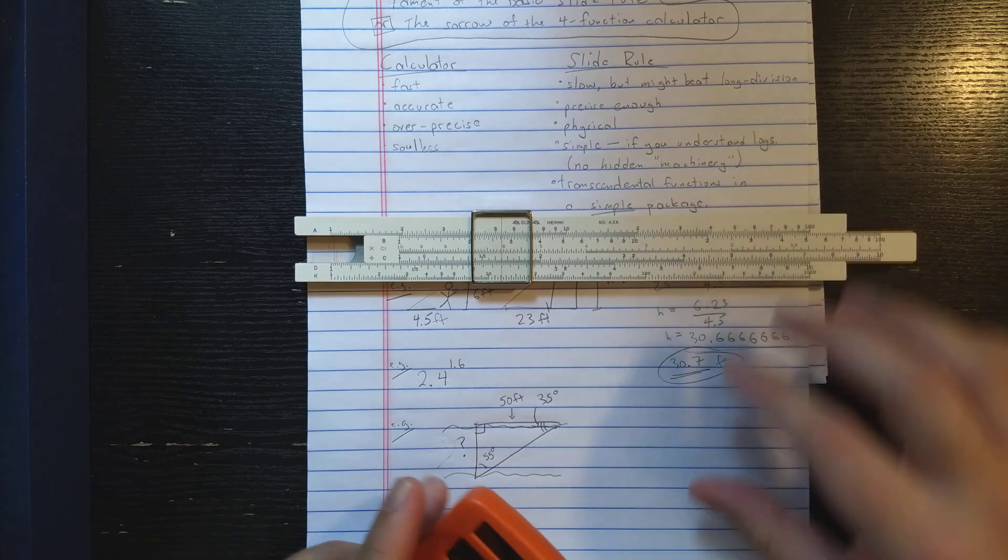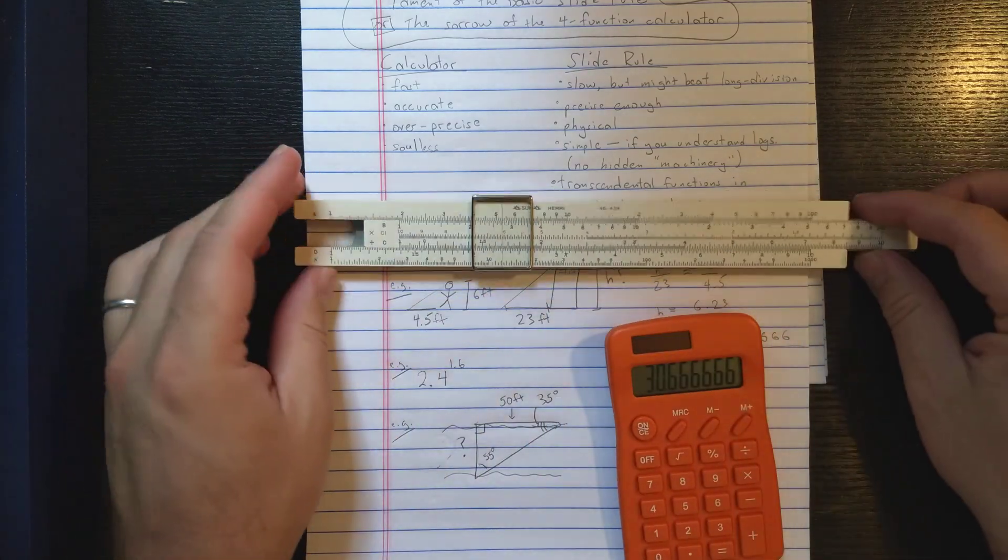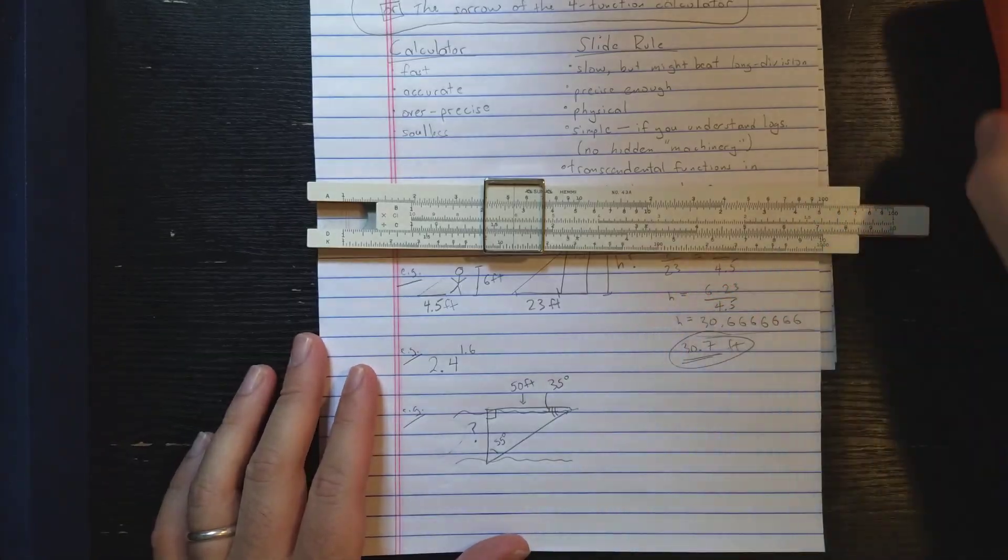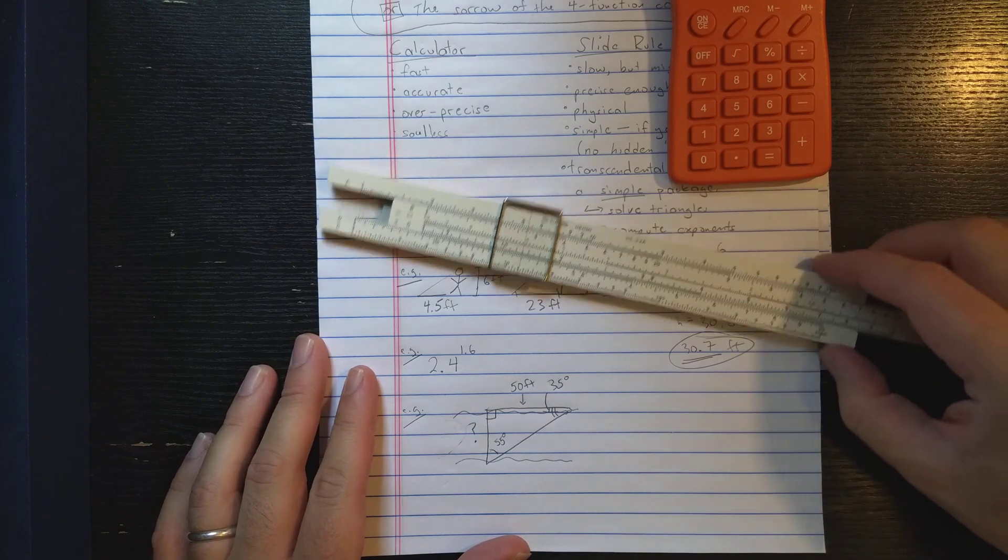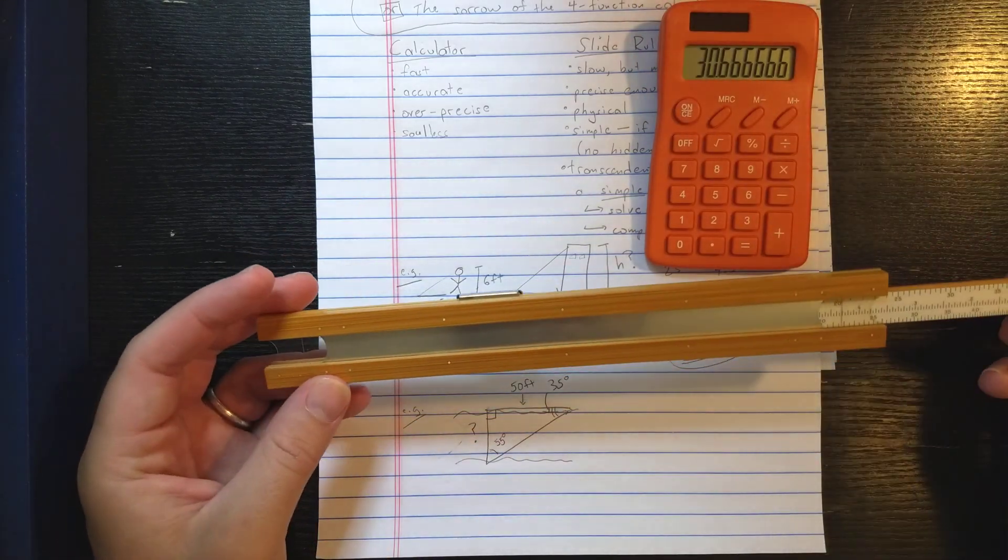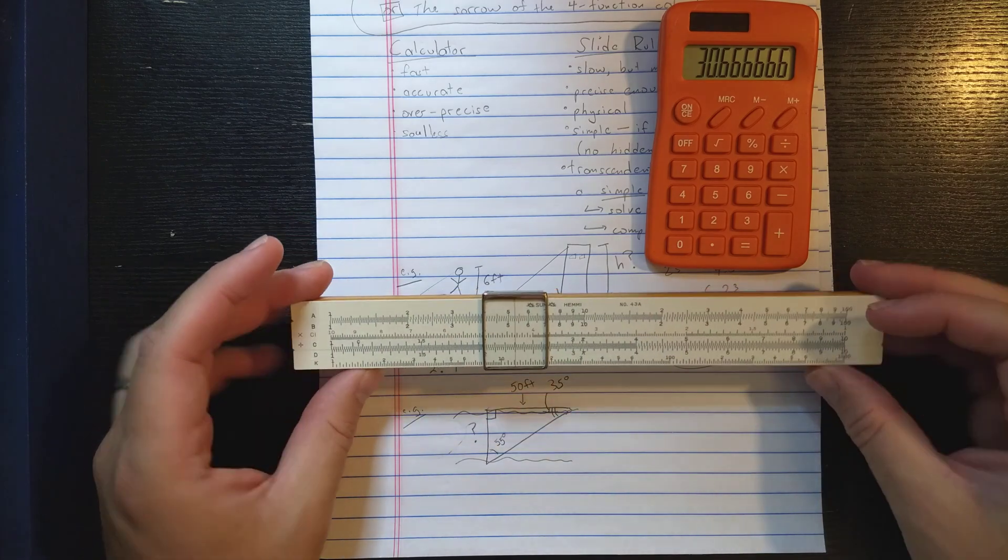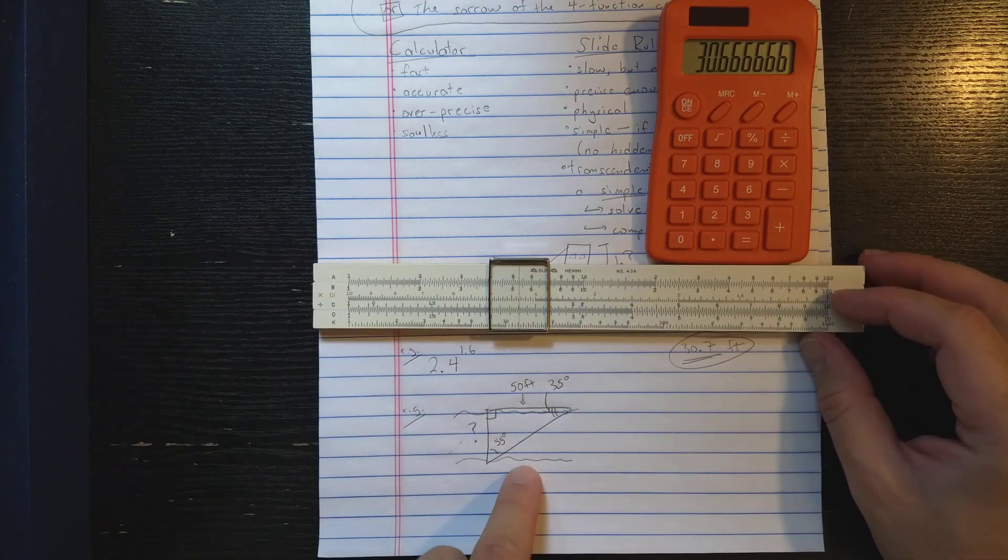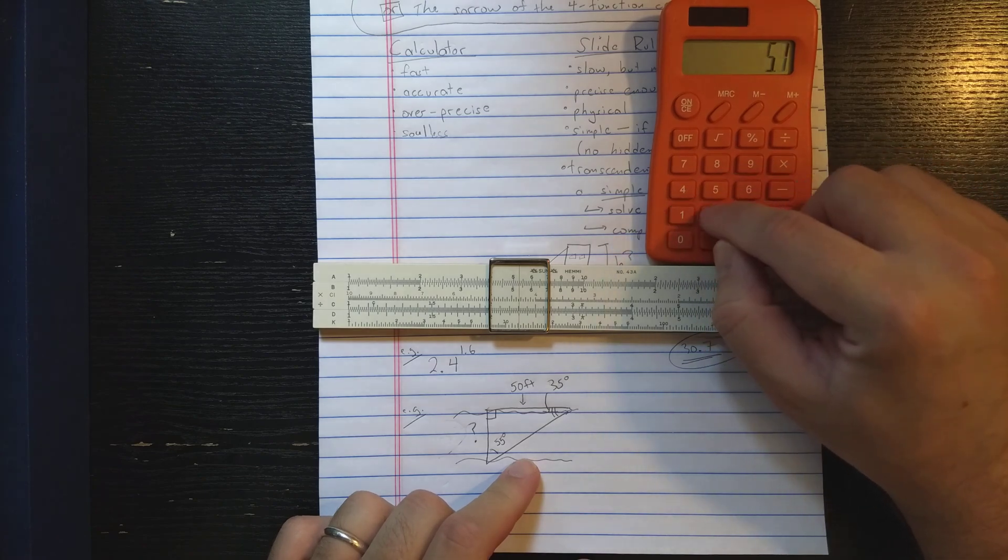Now another calculation. So here's some interesting things, right? These last two calculations here, which I'll do on the slide rule are calculations that the four function calculator cannot do. So even this basic middle schooler slide rule here can do these last two computations, whereas the four function calculator cannot.